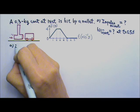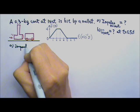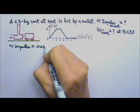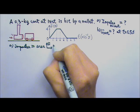Part A: The impulse on the cart equals the area of the force versus time graph.